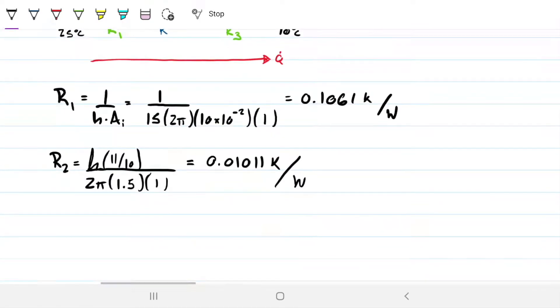Next one, R3. R3 is also convective, so also 1 over convective coefficient, but now the outer area. And this is 5. It's given as 5 times 2 pi times the external radius, it's 11, and then the 1 again for the length of the pipe. And this gave me 0.29 approximately. This is the greatest resistance.